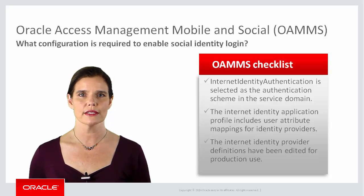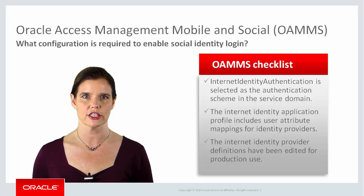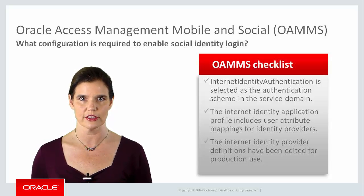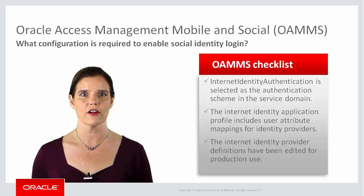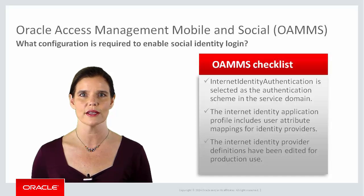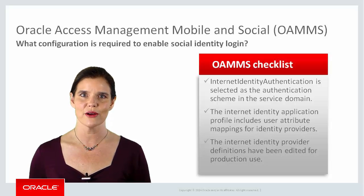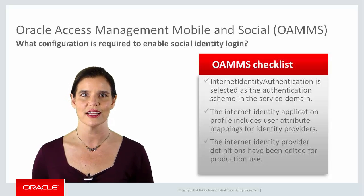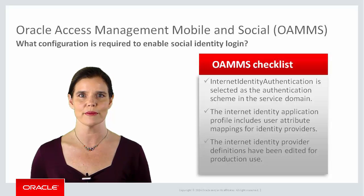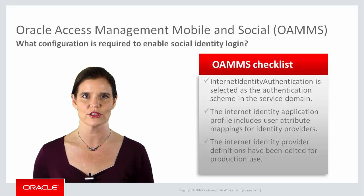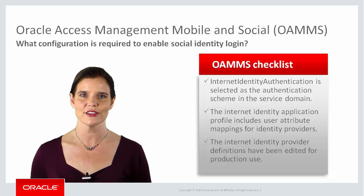The appropriate Internet Identity Provider Definitions have been edited for production use. Typically, this involves opening a developer account with a provider in order to obtain a consumer key and consumer secret that will then be added to the provider definition. After OAMMS is all set up and ready to go on the server, you simply need to configure the MAF application to use a mobile social authentication type, and users can log in by using their social identities.